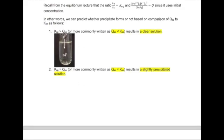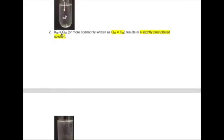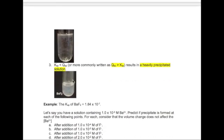If Ksp is greater than Qsp, or usually we would actually start with Q first, so Qsp is less than Ksp, we get a clear solution. If Qsp is equal to Ksp, we get a slight precipitate. If Qsp is greater than Ksp, we get a heavy precipitate.